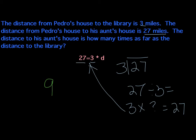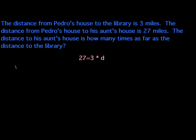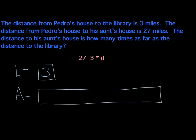So in looking at this problem, another way that we can try to solve it is to use a picture or some kind of model. So let's say that L is going to represent the distance to the library, and A is going to represent the distance to Pedro's aunt's house. So the distance to the library is 3 miles, and then the distance to the aunt's house is 27.